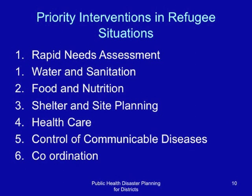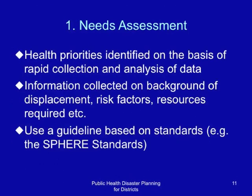What is involved in the rapid needs assessment? Health priorities are identified on the basis of rapid collection and analysis of data. Information is collected on background displacement, risk factors, resources required, and others. It is important to use a guideline based on standards — for instance, the Sphere Standards.